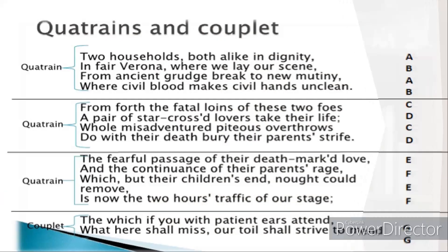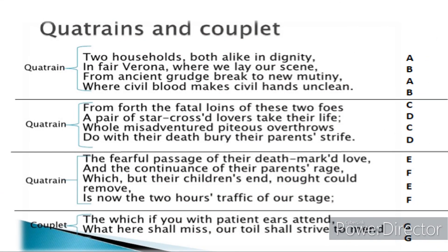A famous example is Shakespeare's sonnet rhyme scheme. Shakespeare's sonnets are famous for their rhyme scheme of ABAB, CDCD in the octave, and then EFEF, GG in the sestet — fourteen lines in total. The rhyme scheme of the octave is A, B, A, B, C, D, C, D. This is the famous stanza form and rhyme scheme for William Shakespeare.